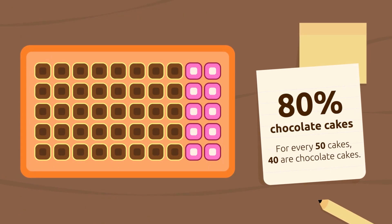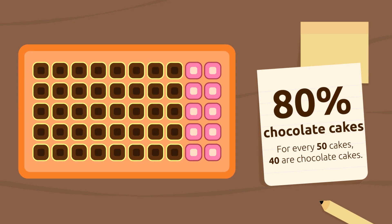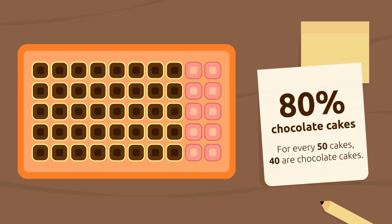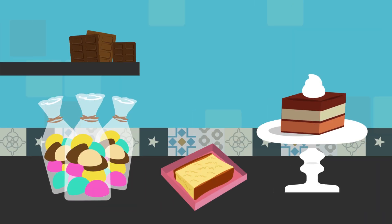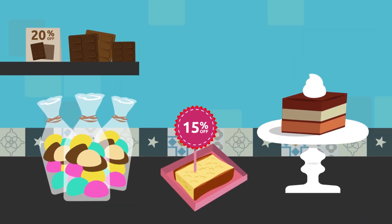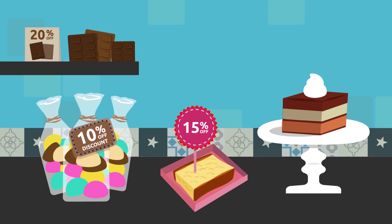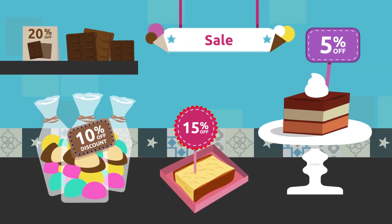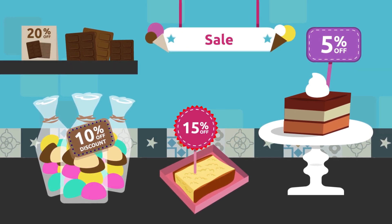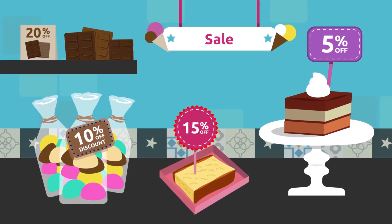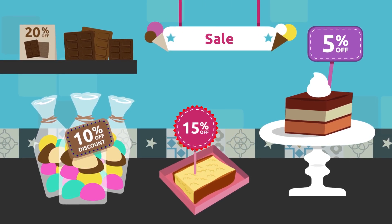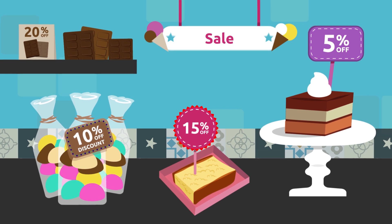Let's look at 50 cakes, for example — 80% of them are chocolate cakes too. We use percentages to calculate all types of discounts for products on sale. You can save a lot of money if you learn how to calculate percentages!